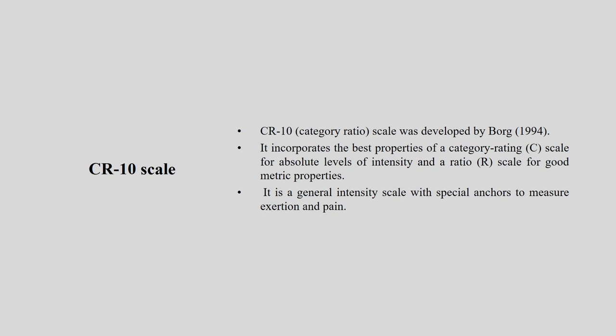To understand the exertion level of sedentary cases, there is a new development by the same person, Gunnar Borg — that is the CR10 scale, or Category Ratio scale. It incorporates the best properties of category rating for absolute level of intensity and a ratio scale for good metric properties. It is a general intensity scale with special anchors to measure exertion and pain.